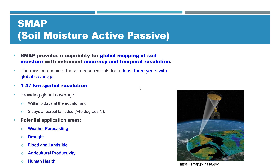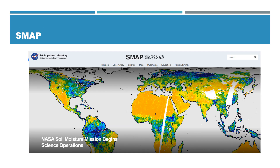SMAP data, or soil moisture data, is very useful for applications ranging from weather forecasting, drought monitoring, flood and landslide, agriculture productivity, human health, and water resources — which is what we are interested in. This is an example of SMAP soil moisture data at a global level, generated by NASA at the Jet Propulsion Lab in California.